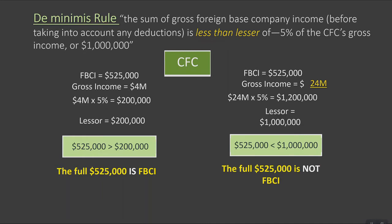Looking at these two scenarios: in scenario one, we don't meet de minimis, so we continue forward through our steps to determine our inclusion amount. In scenario two, we meet the test. The Internal Revenue Code says that if your inclusion is nominal, you don't have a deemed dividend and need not do anything further.